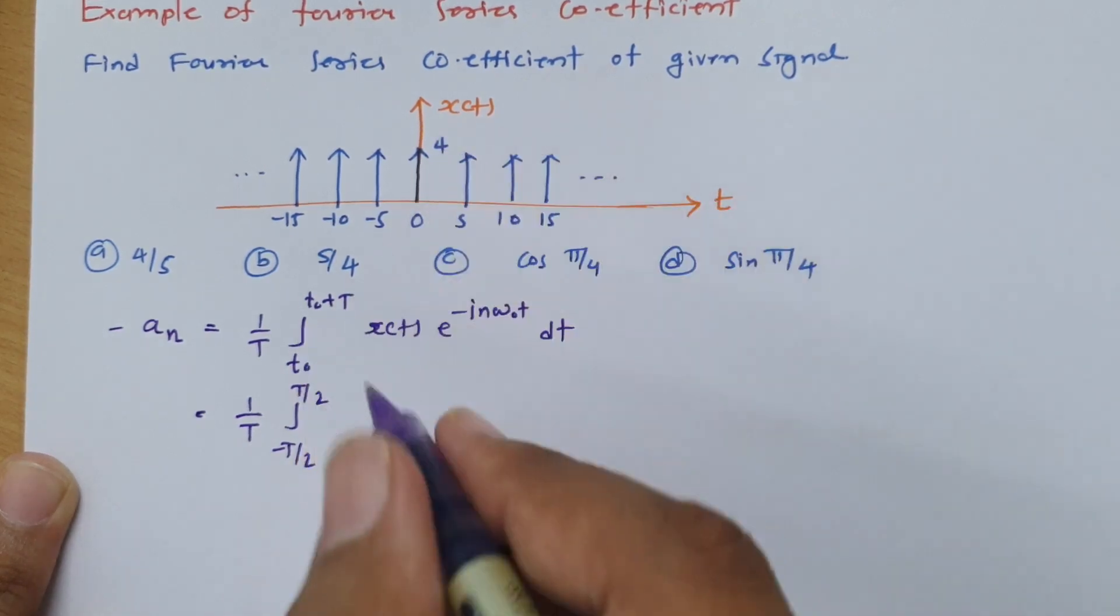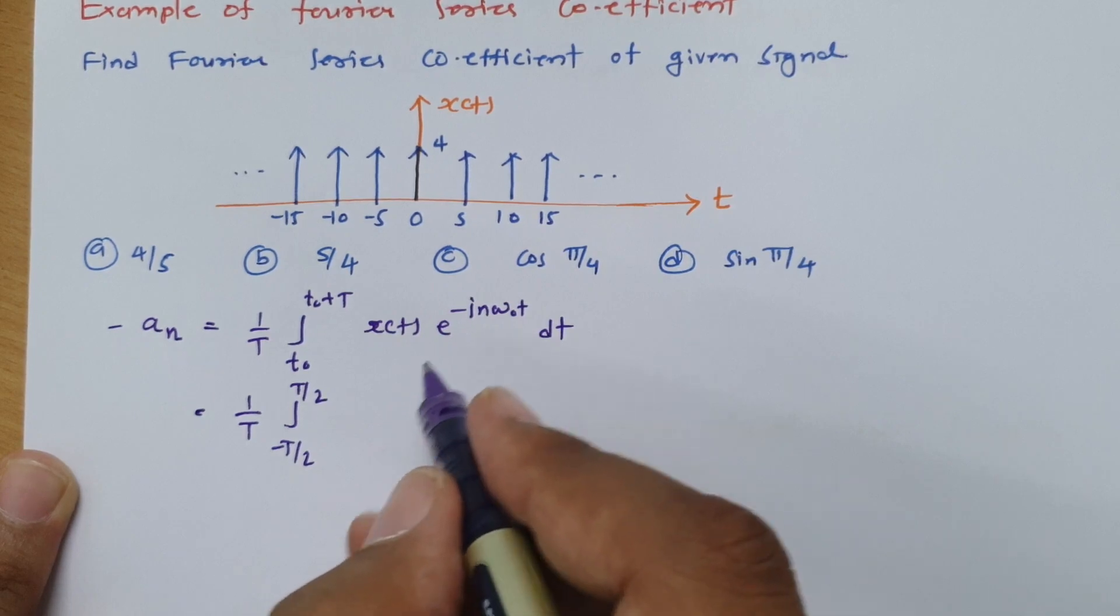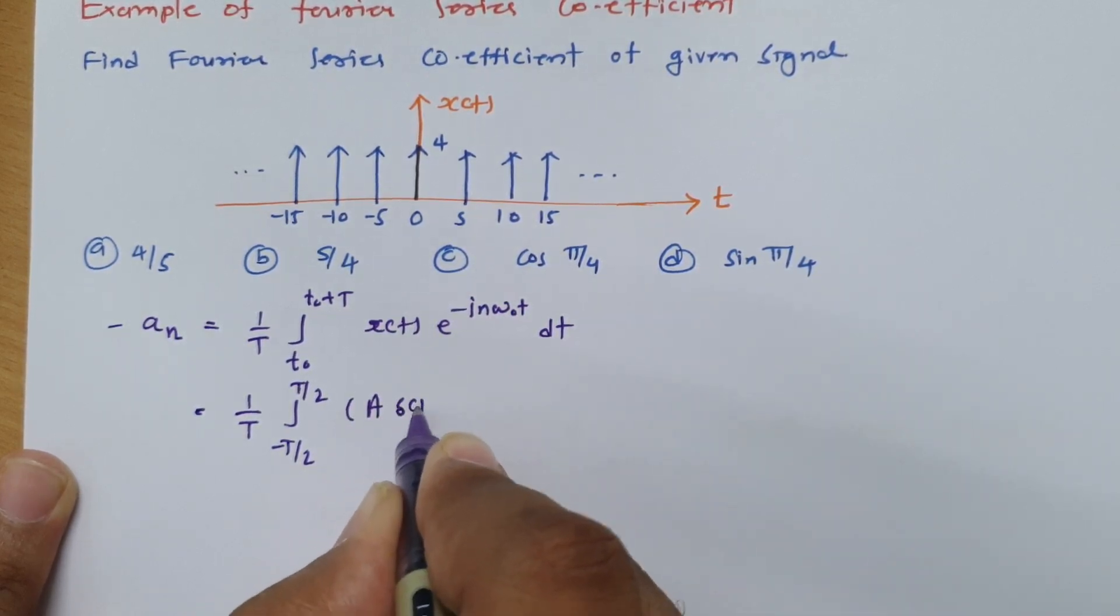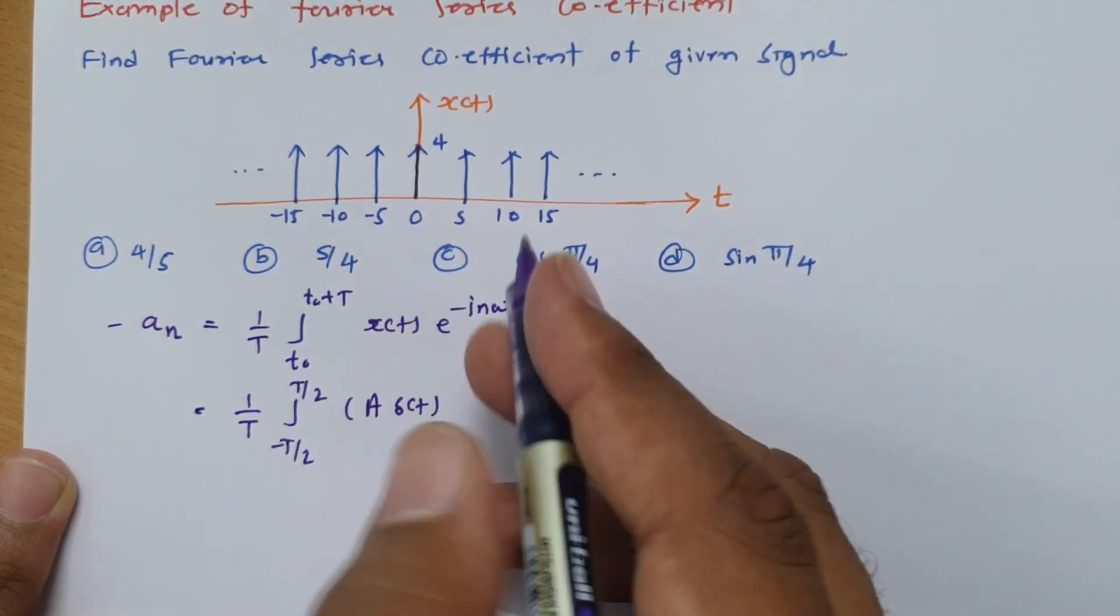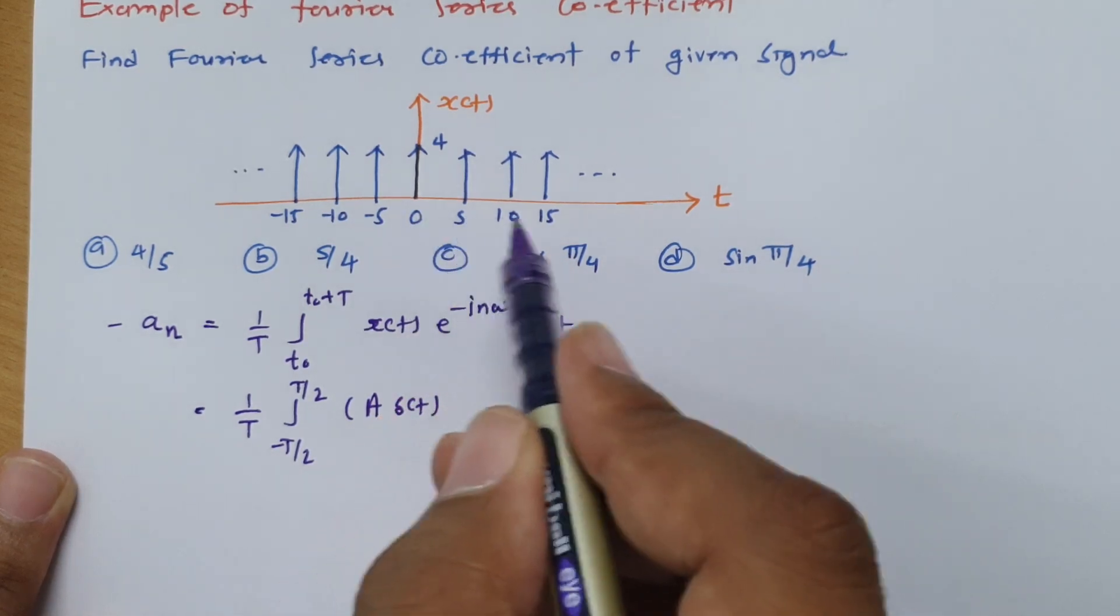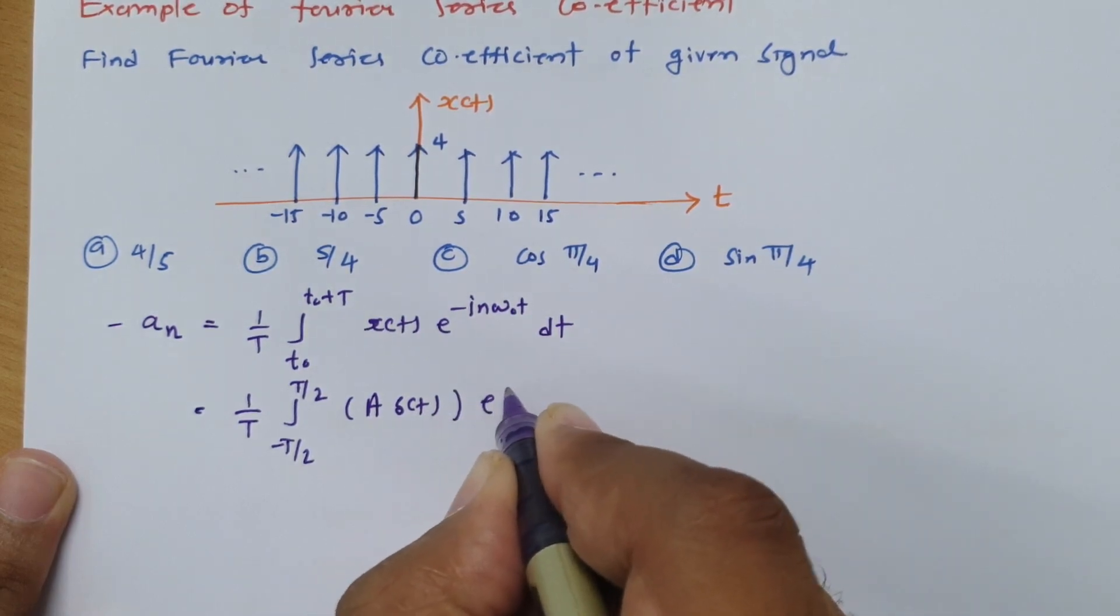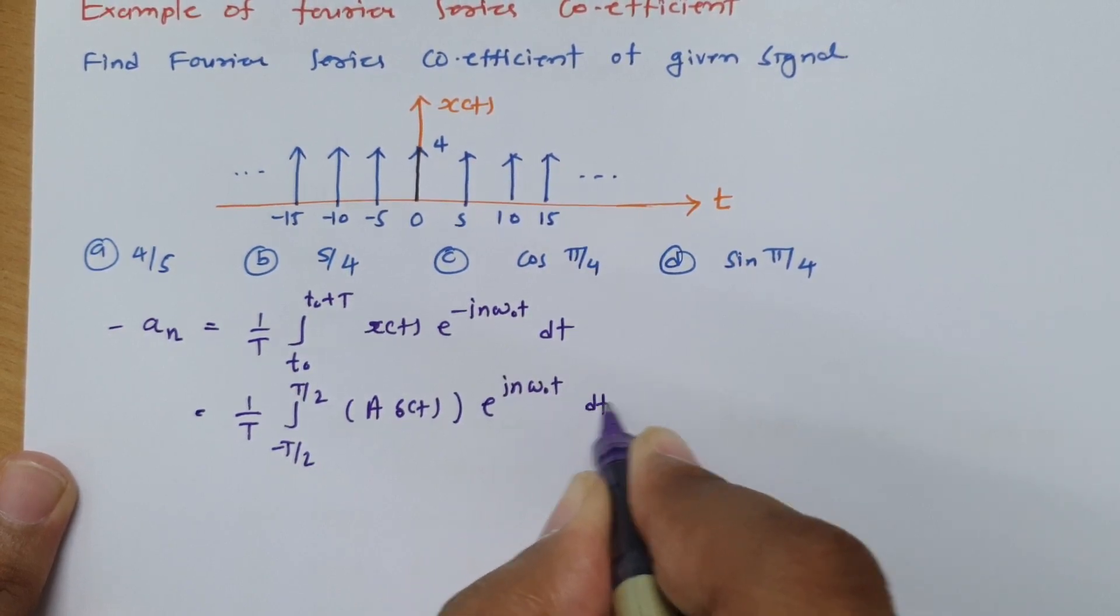This impulse train has magnitude 4. First I will make it generalized. If I say a into delta t, here a is 4 and delta t is the sequence having distance of 0, 5, 10, into e to the power minus jn omega 0 t dt.